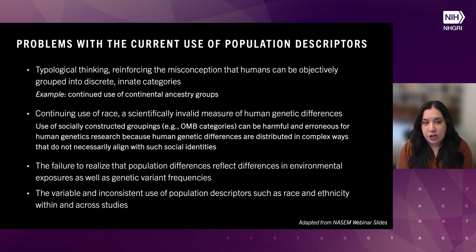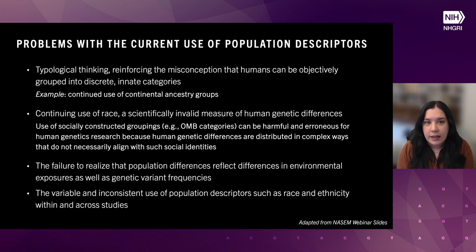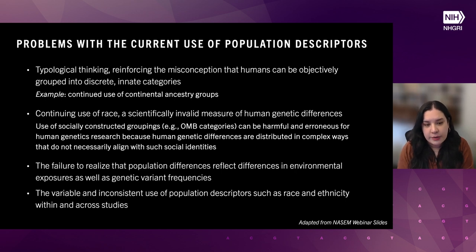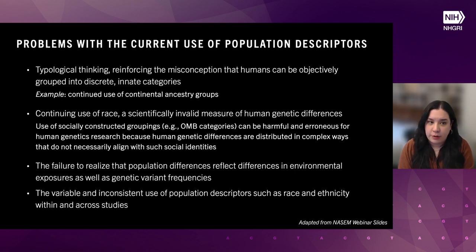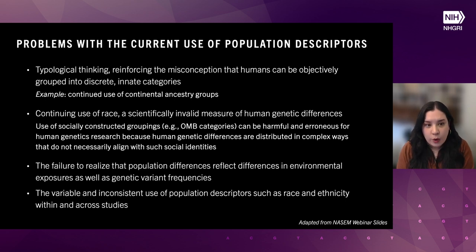Through discussions, several problems were identified in the use of descriptors. One was typological thinking — the idea that humans can be grouped discretely into innate categories. A good example is the pervasiveness of continental ancestry groups that often just recapitulate racial categories. There was also a continuing use of race, which is a scientifically invalid measure of human genetic differences. This stems partly from the use of OMB categories, which were also seen as harmful and erroneous when it comes to human genetics research.